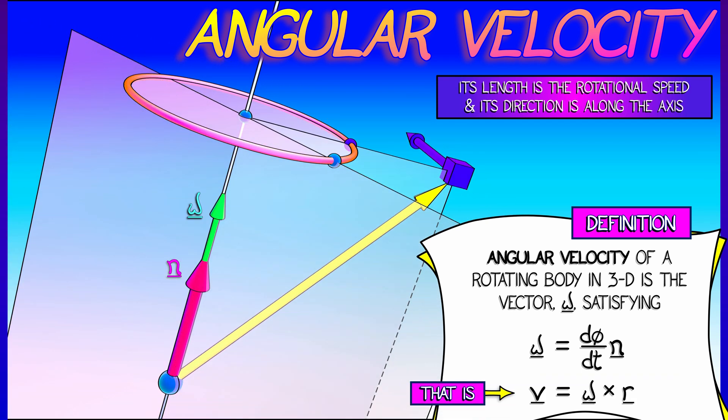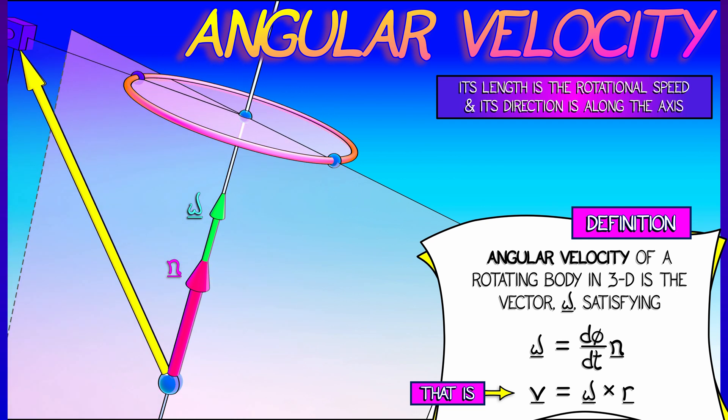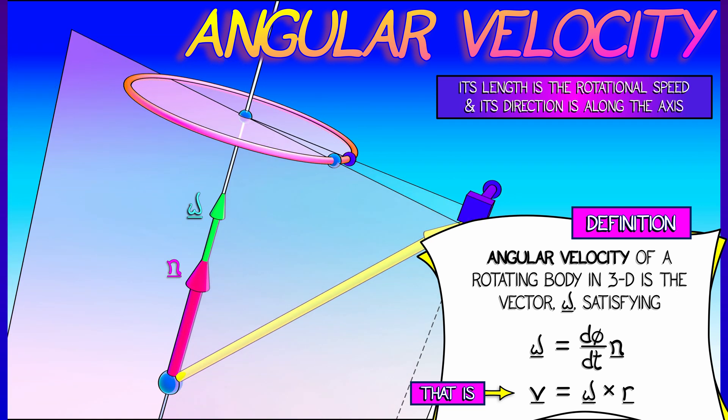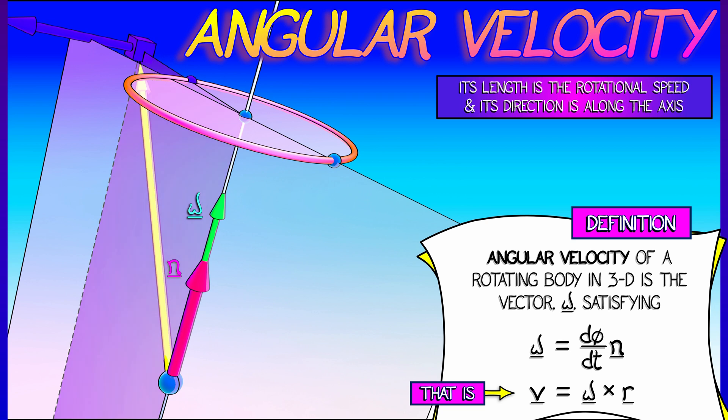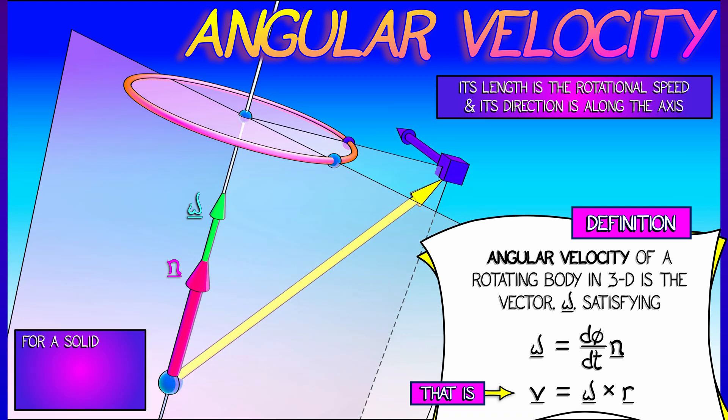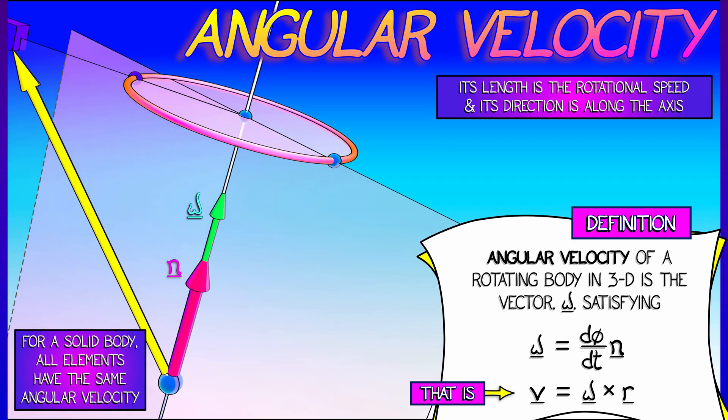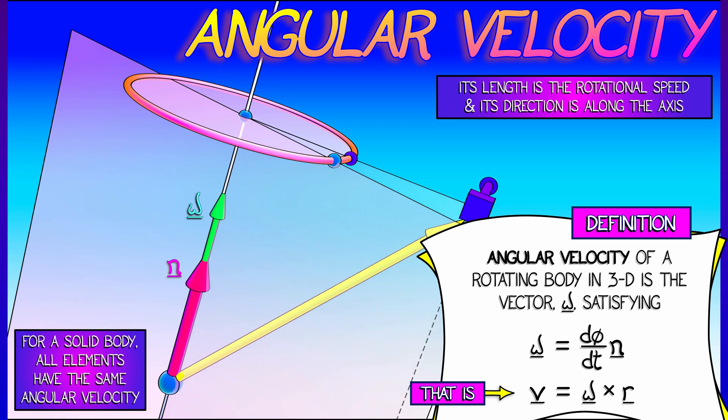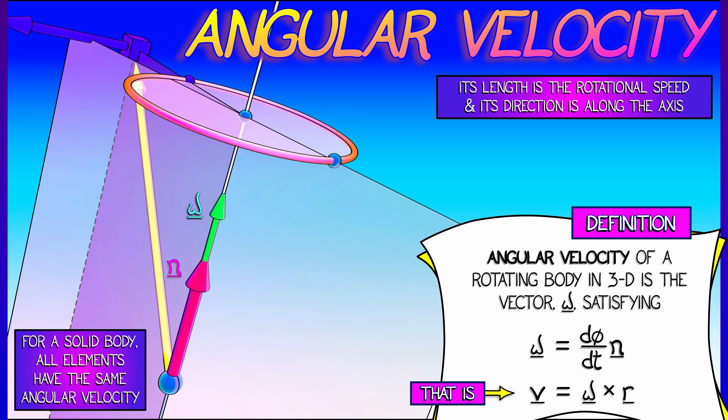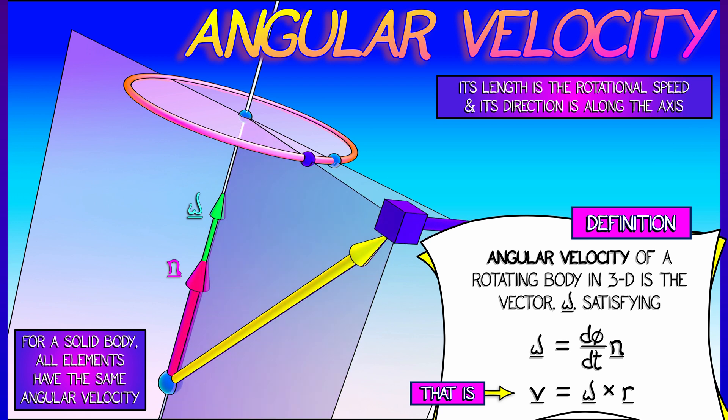If I specify a bit more that v is equal to omega cross r using the cross product, then what we see is that this vector n, and thus omega, are pointed in the direction along the axis that's given in terms of the right-hand rule.